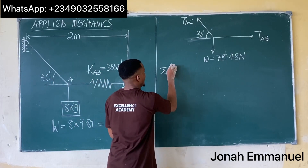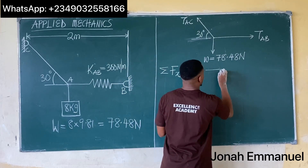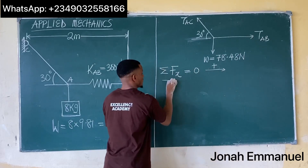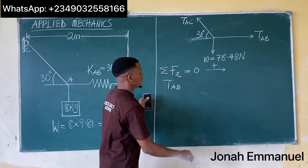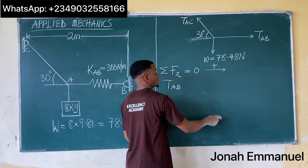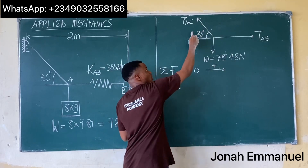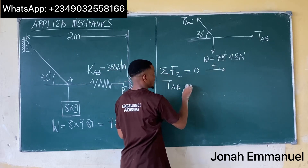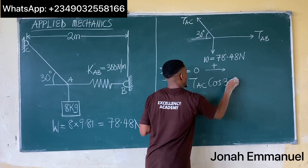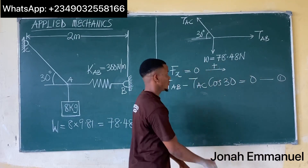For summation of horizontal forces equal to zero: TAB is a horizontal force going in the positive direction. Resolving TAC horizontally, it points in the negative direction, giving minus TAC cos30. So the first equation from resolution of horizontal forces is: TAB minus TAC cos30 = 0.